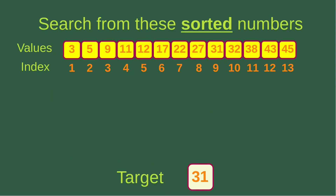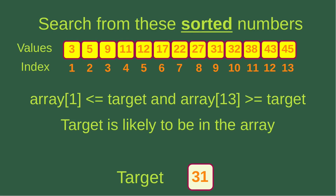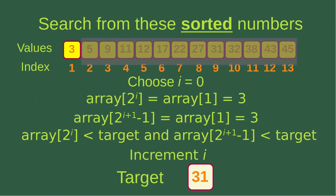Now let us see an example. Suppose I want to do exponential search on these numbers, which are already sorted, and the number to search for is 31. We can see that the first element in the array, which is 3, is smaller than or equal to the target, and the final element, which is 45, is larger than or equal to the target. So we can expect that the target is likely to be in the array. Then we can find out the value of i.